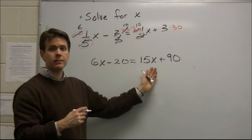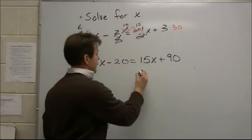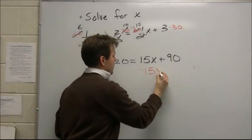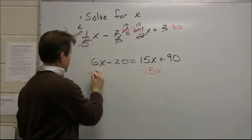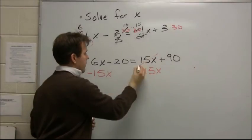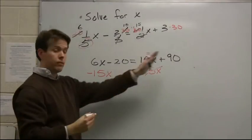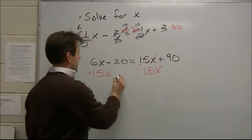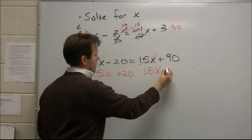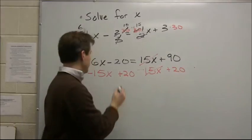So subtract 15x from both sides. And in that same step, I'm going to move the constant term to the right-hand side. And those cancel.